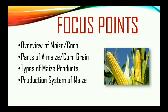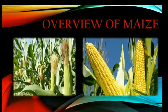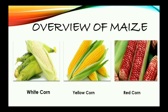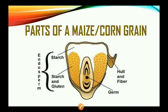Our focus points: we're going to look at an overview of maize, parts of a maize grain, types of maize products, and the production system of maize. Maize or corn is a cereal crop grown widely. About 50 species of maize exist, consisting of different colors, textures, grain shapes and sizes. White, yellow, and red are the most common types, as you can see in this picture.